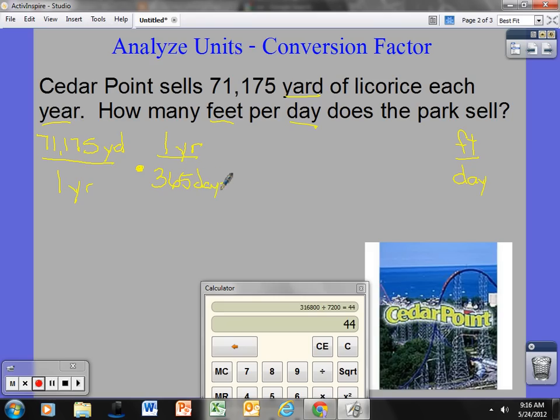I'm going to cross the years out. They cancel each other out. I need to keep days, so I'm going to box it in. Now I need to get from yards to feet. What do I have in one yard? I know one yard is the same as three feet. So I have my feet up here, the yards cancel each other out. I have days here, feet here. Now I just multiply straight across.